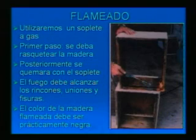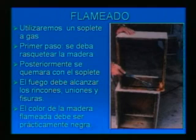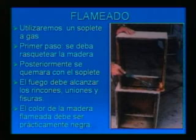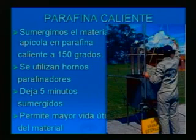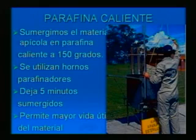El flameado es más sencillo: se usa un soplete a gas. Antes de usar el soplete, se debe raspar bien con el raspador el material internamente para sacar todo lo que sea cera o propóleo. Se flamea bien todos los rincones hasta que la madera quede de color prácticamente negro. La parafina caliente es otra forma de desinfectar, llegando hasta 350 grados. Produce un doble efecto: esteriliza y protege el material. Con 5 minutos sumergido es suficiente.